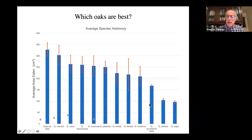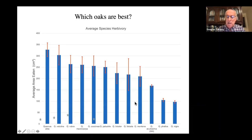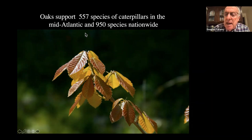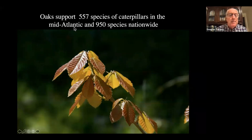I would pick oaks based more on soil type and diseases you might want to dodge rather than which ones support the most biodiversity — because they're all very good. Just to compare: 550 species of caterpillars on oaks in the mid-Atlantic states; on tulip trees, 21 species; on crepe myrtles, zero; on Bradford pear, zero. That's the type of difference we're talking about.